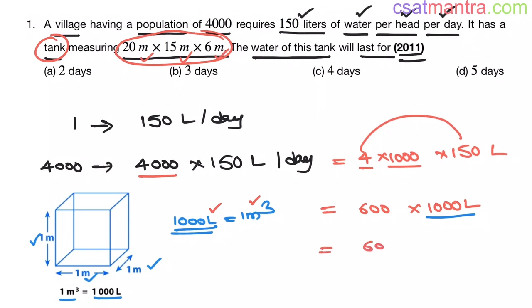This is equal to 600 into 1 meter cube. This is 600 meter cube. So 600 meter cube water for 4000 people per 1 day my friends.